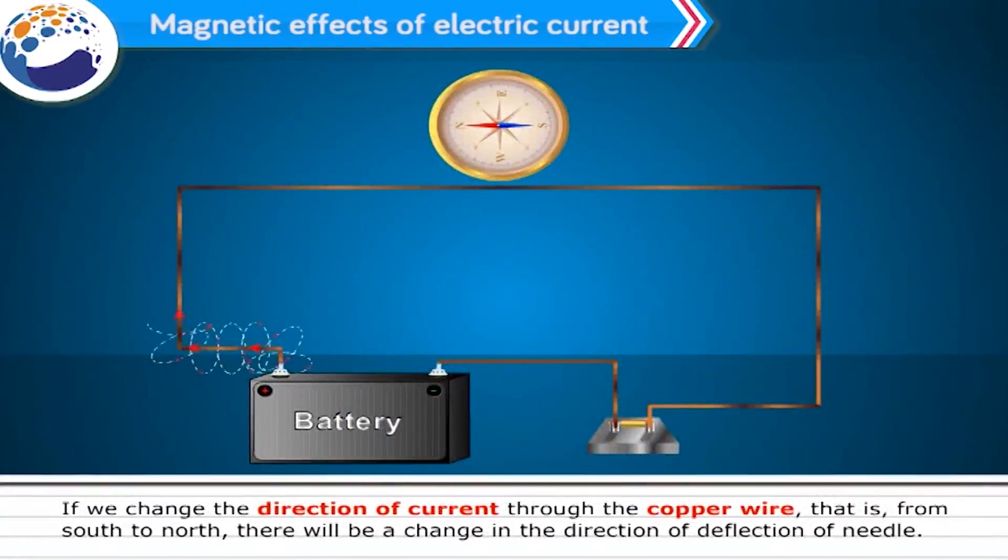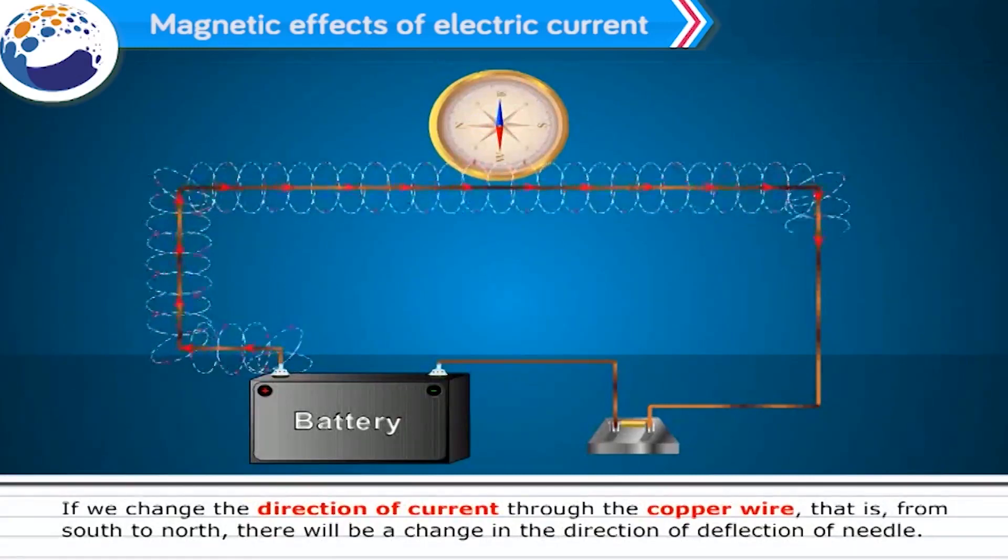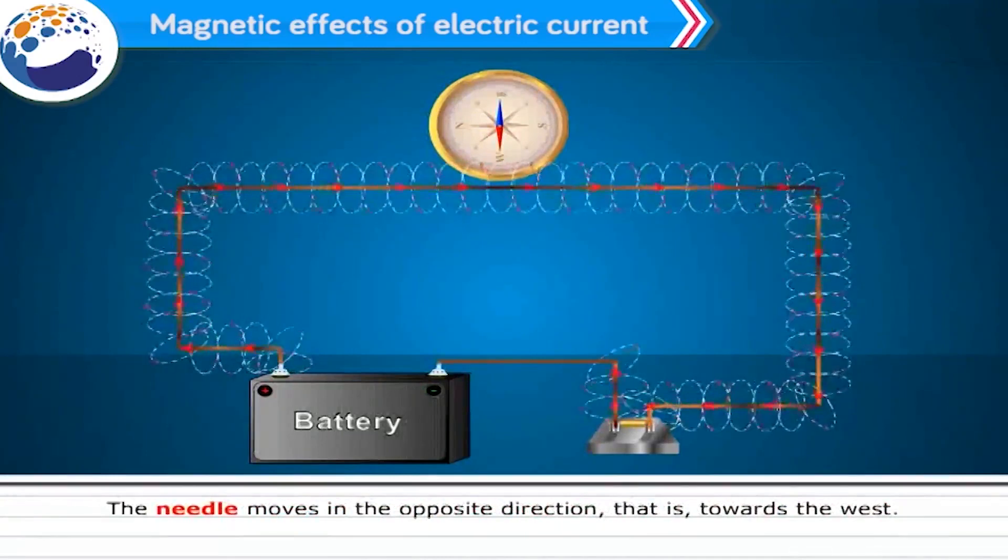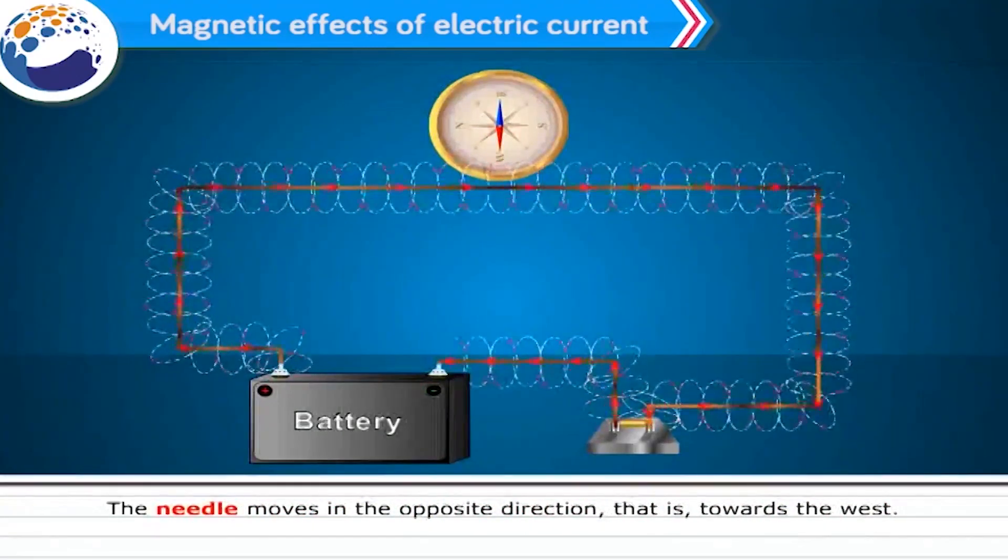If we change the direction of current through the copper wire, i.e., from south to north, there will be a change in the direction of deflection of needle. The needle moves in the opposite direction, i.e., towards the west.